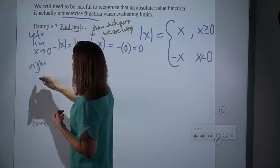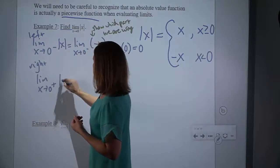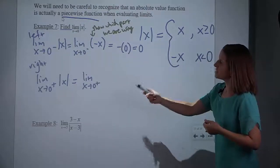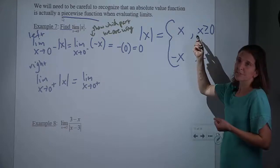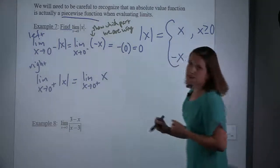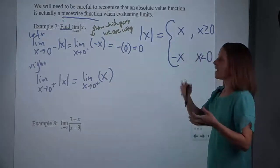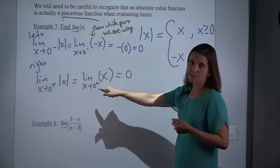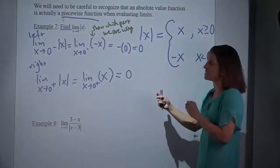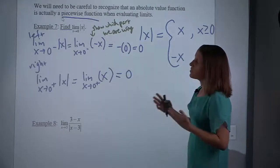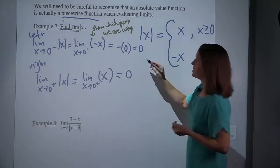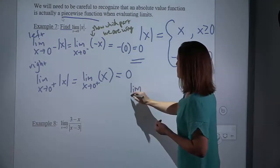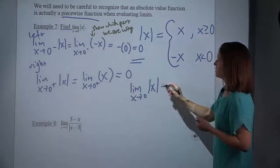Now we're going to do the limit from the right. If I want to do the limit from the right of absolute value of x, I have to decide which piece I'm using. If I'm coming from x's that are to the right of 0, then those are x's that are greater than 0, so now I am using the positive x piece. After that, it's back to a normal problem — I take the limit by replacing x with my number. The superscript just told me which piece to use. It's just the 0 that I'm plugging in. My left limit was 0 and my right limit is also 0. Those two things equal each other, and so we can now answer the original question: the limit as x approaches 0 of absolute value of x is 0.